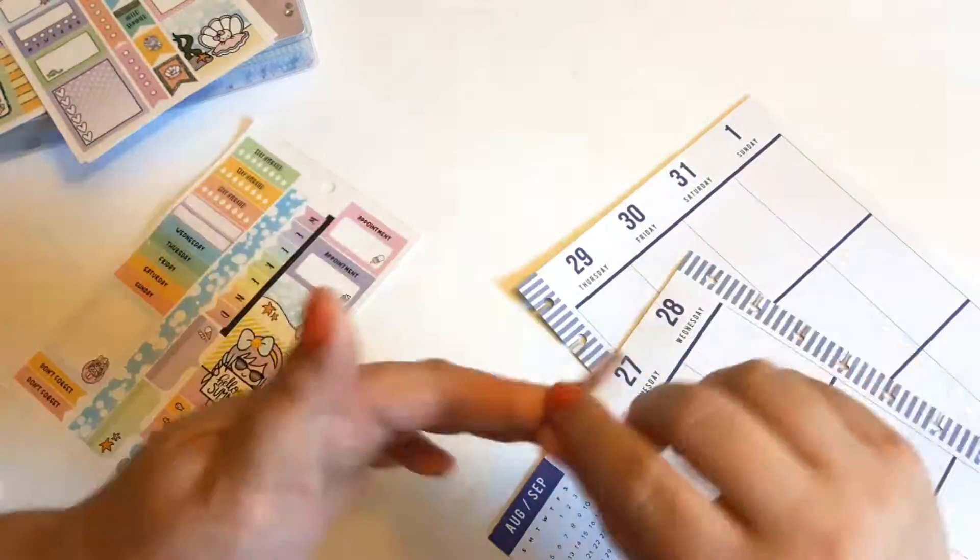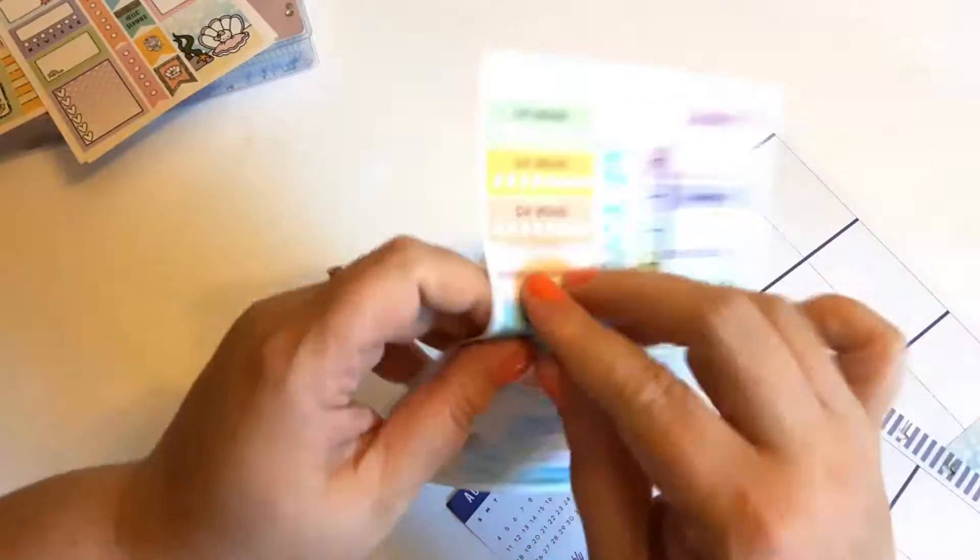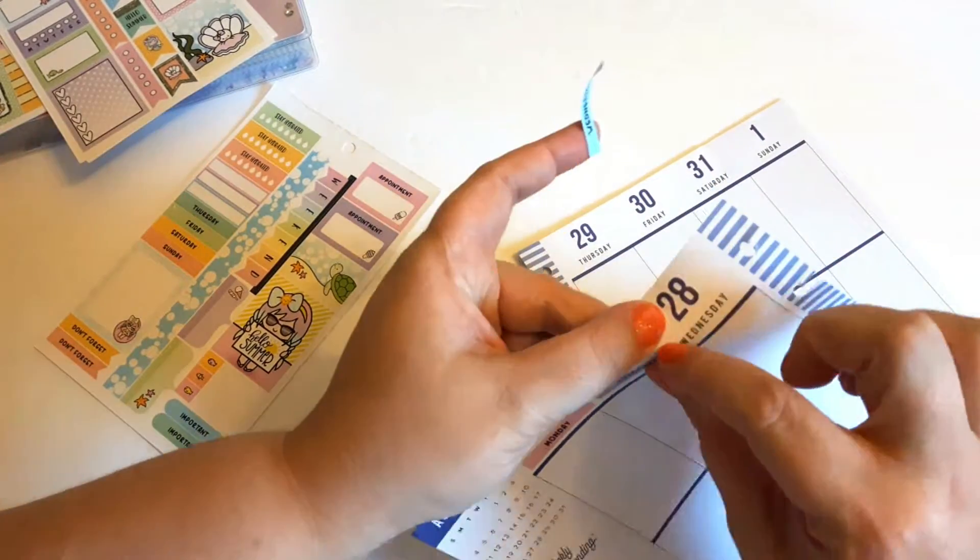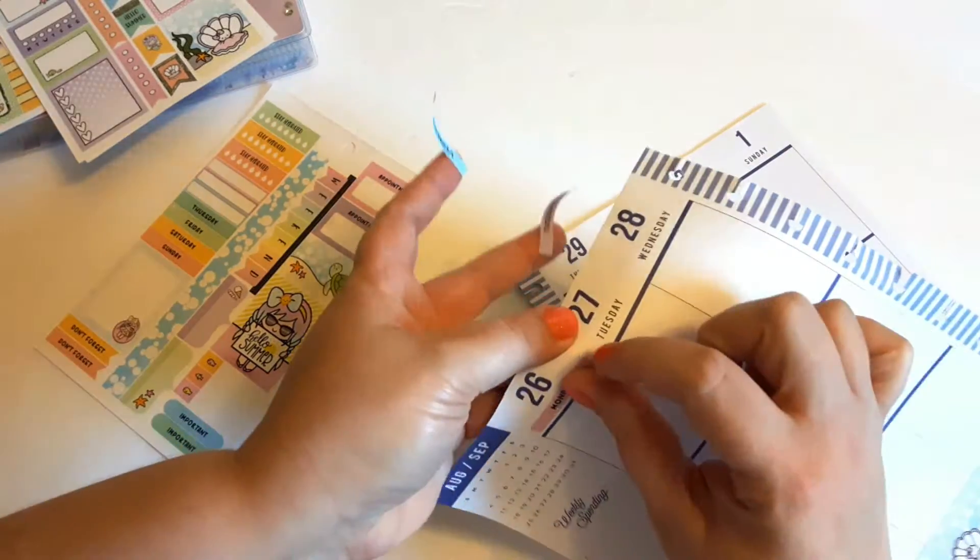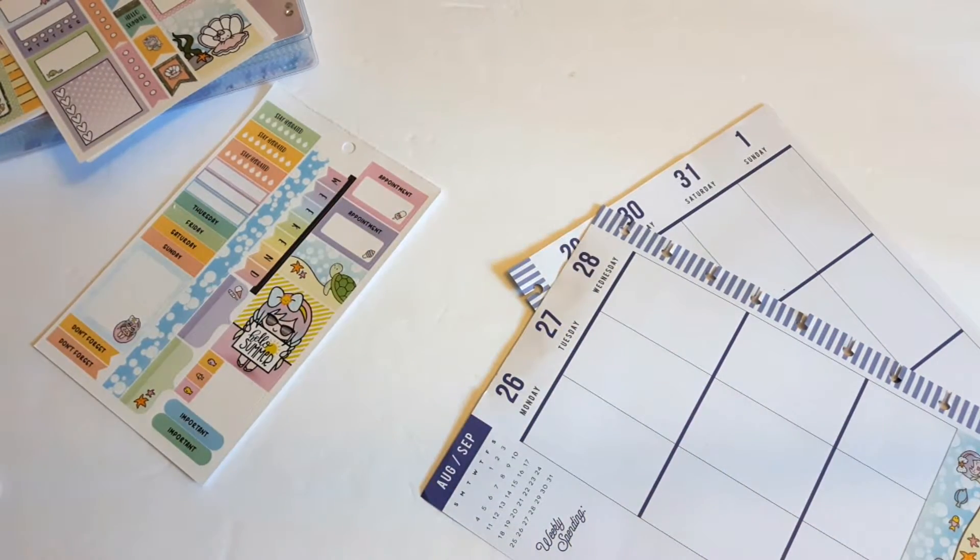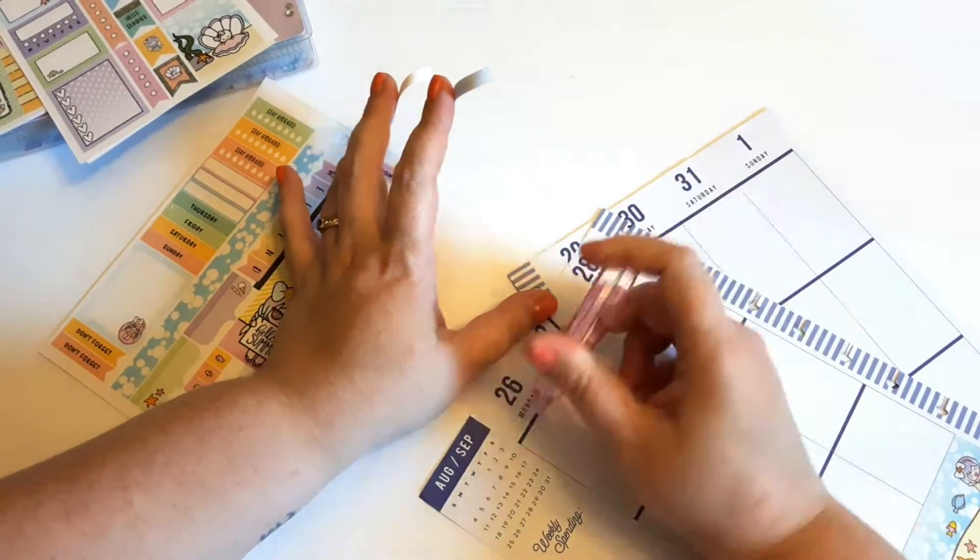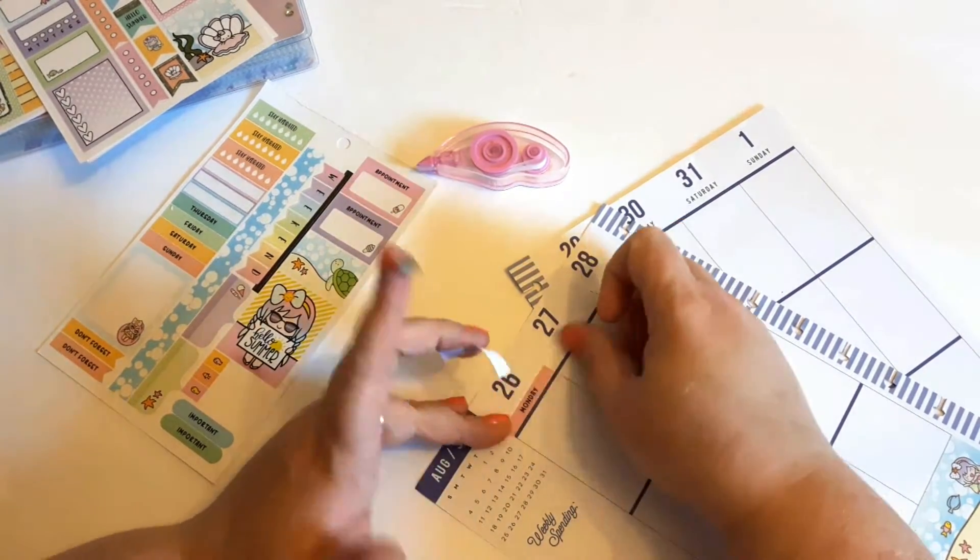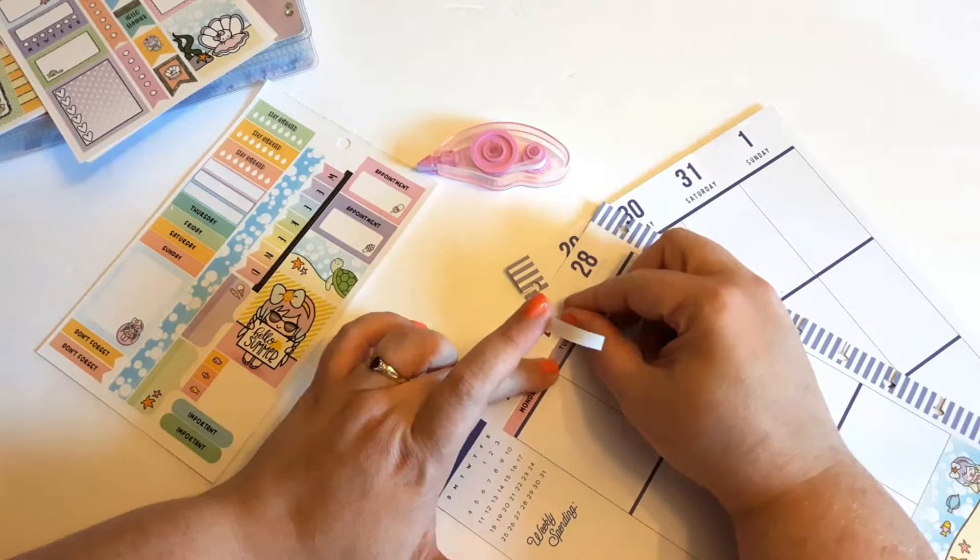You'll see me, I've taken out all the pages from the book and that's just a preference of mine. That way I can see what all comes in the kit and I can play around with it and design it and just see what I want to work with.